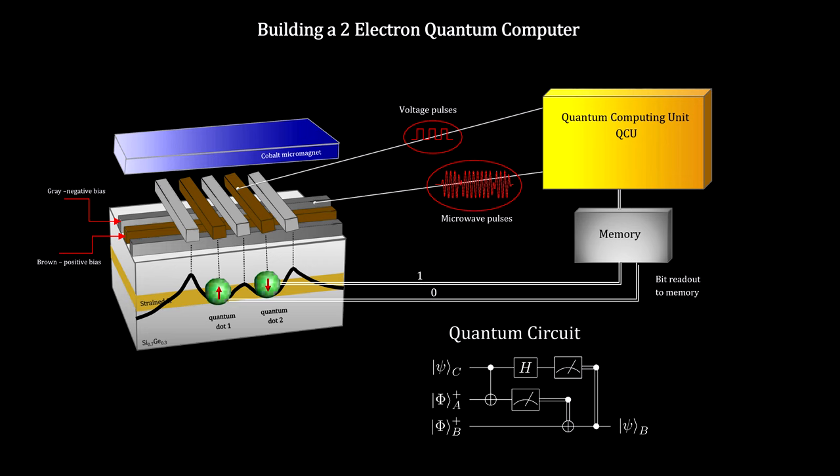Combinations of quantum gates are called quantum circuits. These combine to execute computer instructions. This is a 2 electron spin qubit quantum computer.